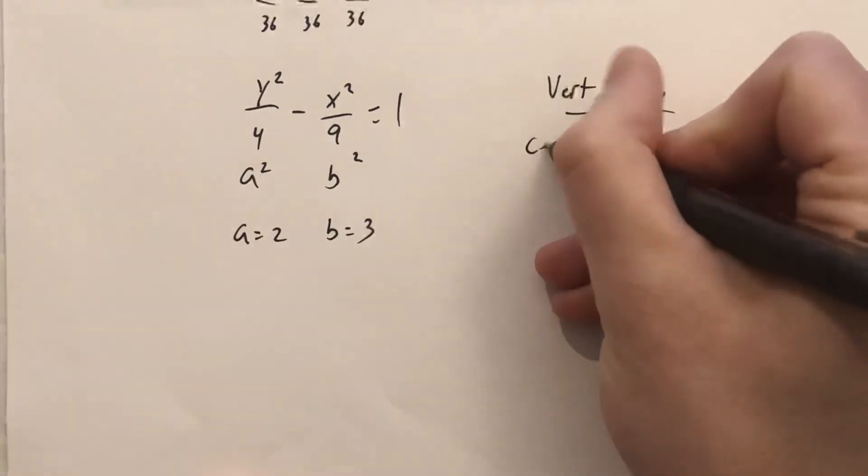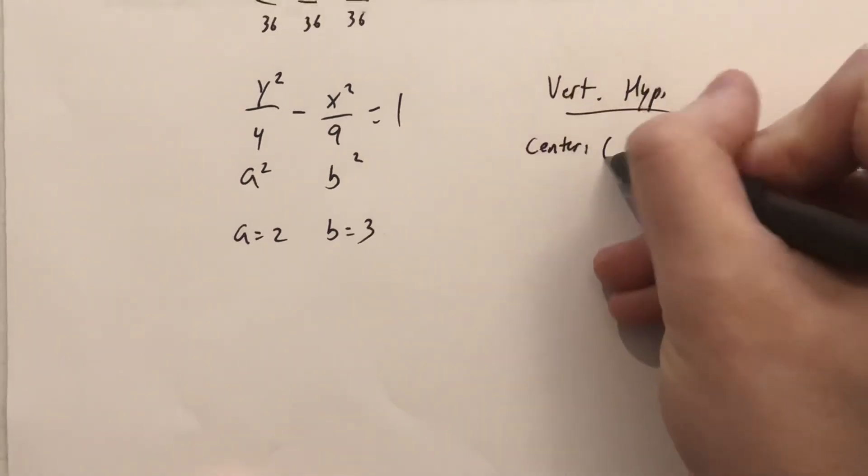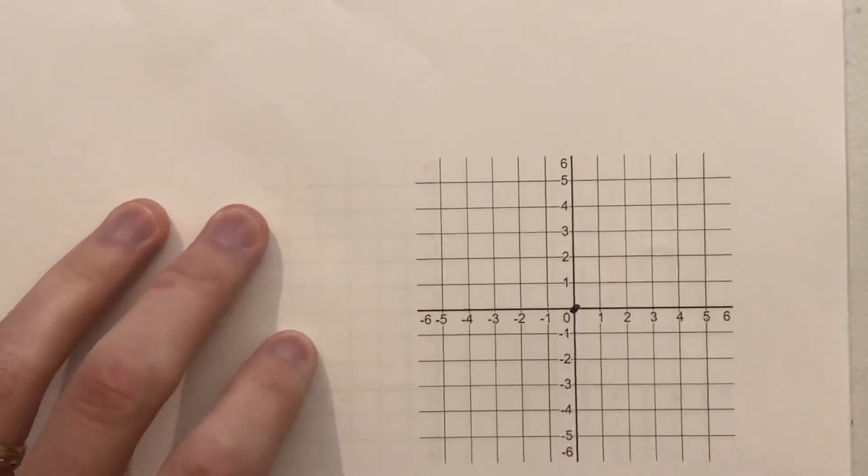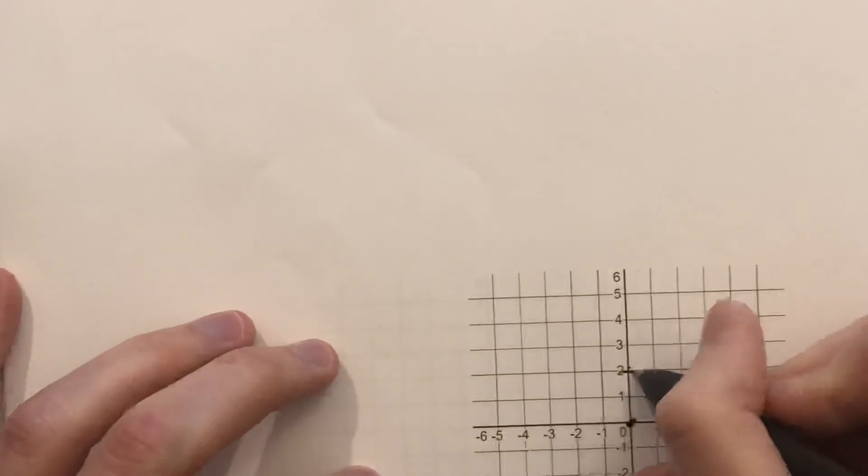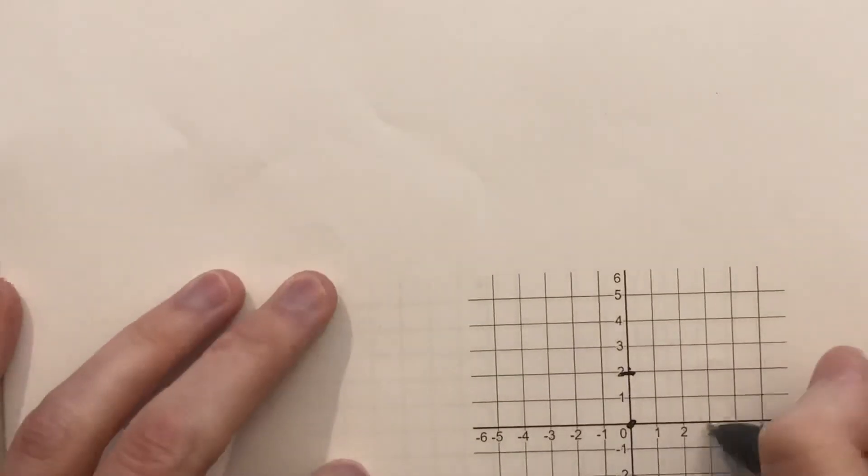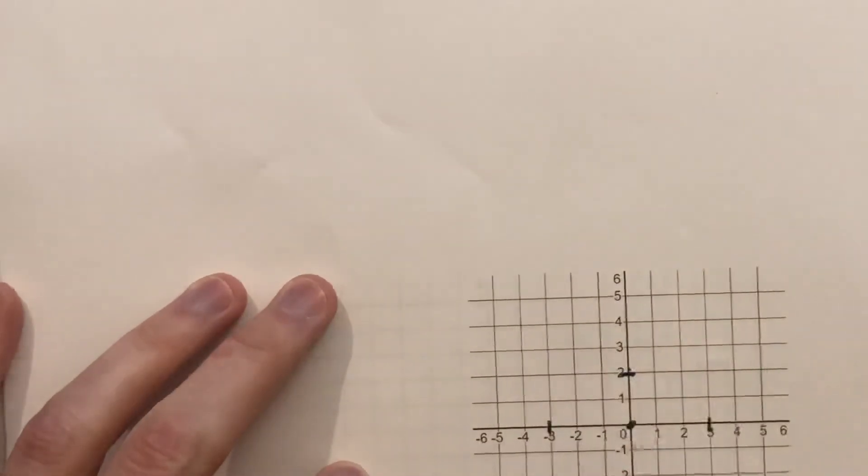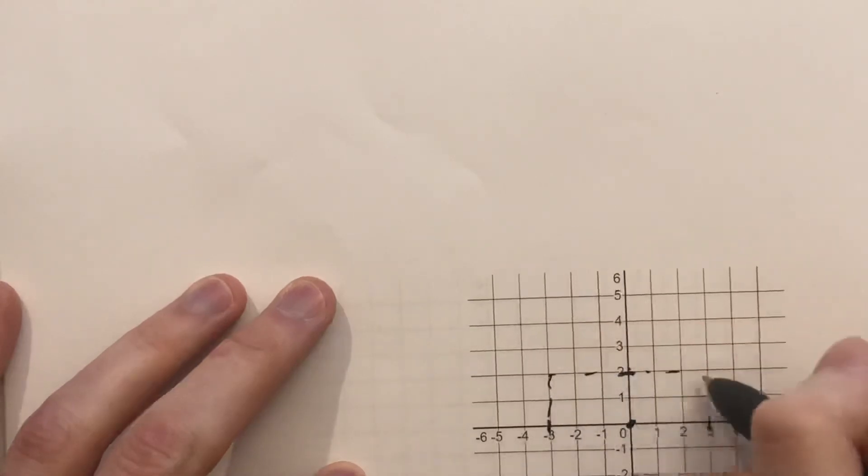And also should mention that without the x and the y squared quantities having any pluses or minuses there, we also know our center is again at 0, 0. So centered at 0, 0, the a that was associated with the y is 2. So up 2 and down 2, the b associated with the x, left and right 3.